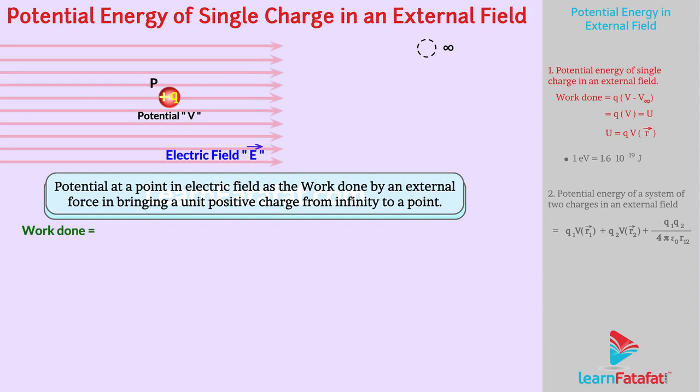Work done equals to Q into bracket V minus V infinity. Therefore, work done equals to QV which is equals to U since V infinity equals to 0. This work done is stored as potential energy.